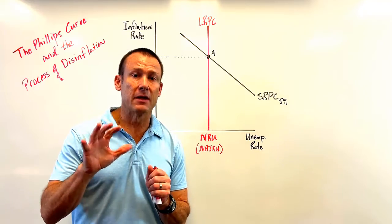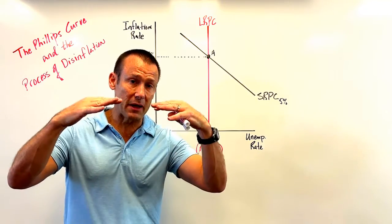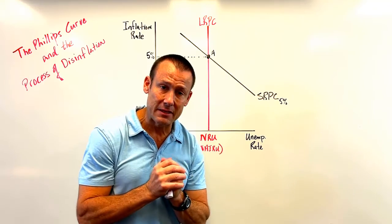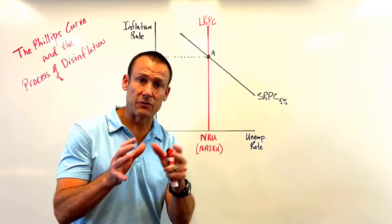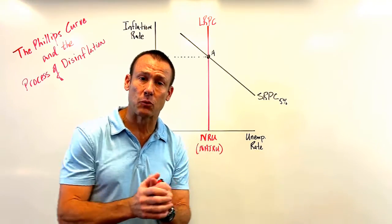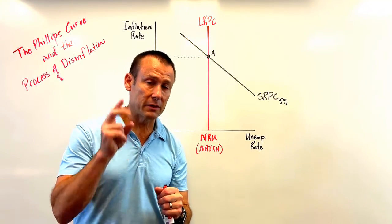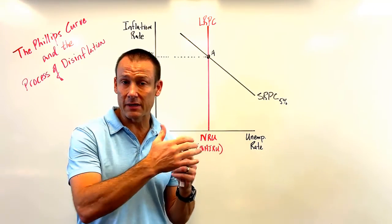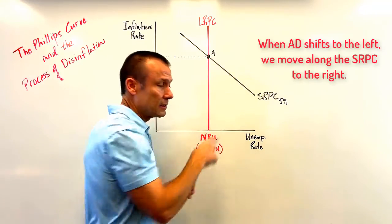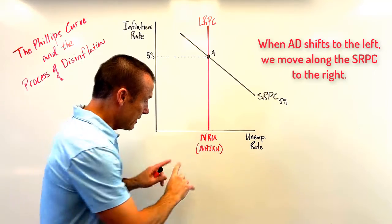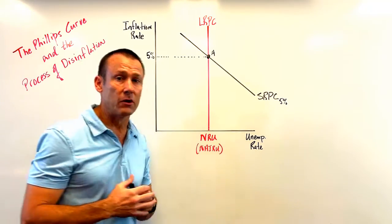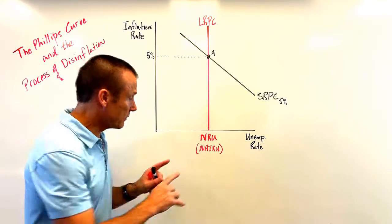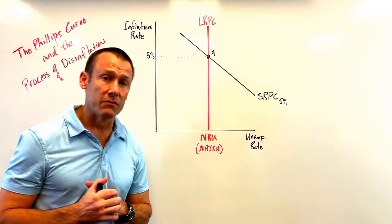What is the Fed going to do? The Fed is going to raise the IORB — the interest on reserve balances — which raises the federal funds rate, our policy rate. This should raise interest rates generally in the economy, which should decrease interest-sensitive spending: investment, consumption, and even net exports. All of those decrease, causing AD to shift to the left in the ASAD model. As AD shifts left, we move to the right in our Phillips Curve model, meaning the economy is getting worse.